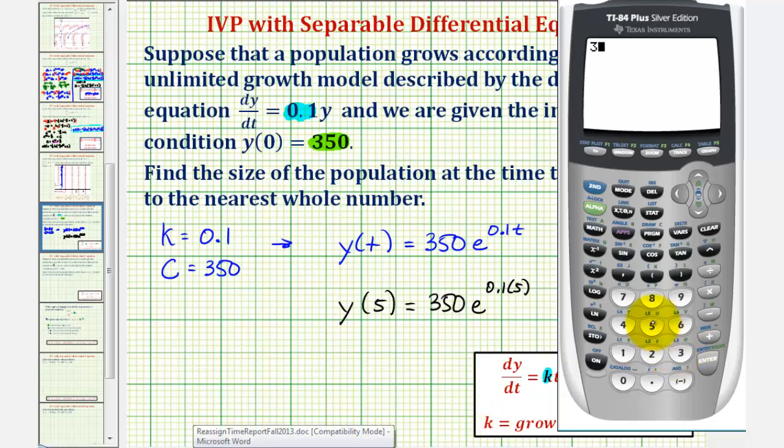So we have 350. Second natural log brings up e raised to the power of. And we have 0.1 times 5, close parenthesis, enter. So we'll say the approximate population at t equals 5 is 577.